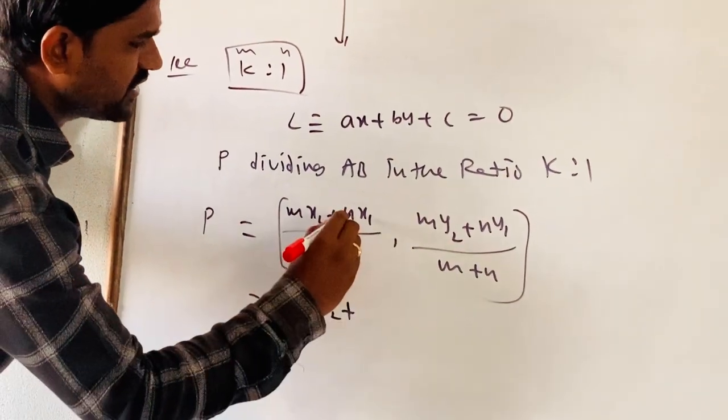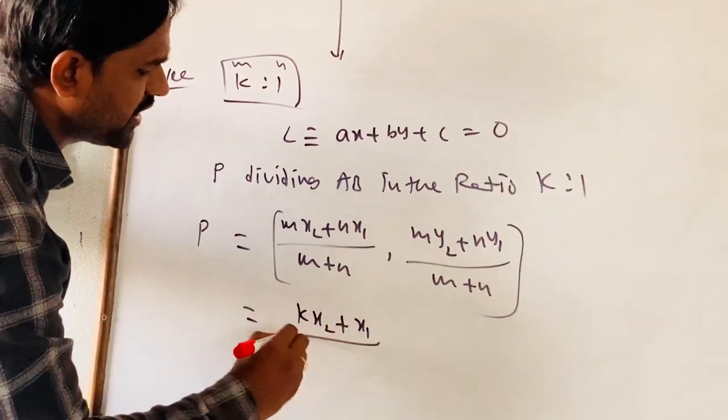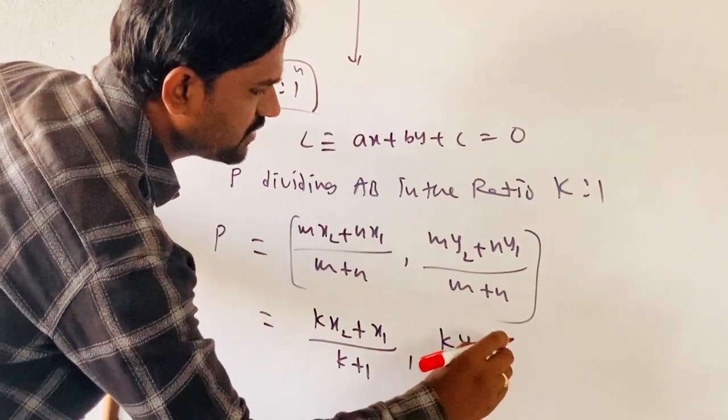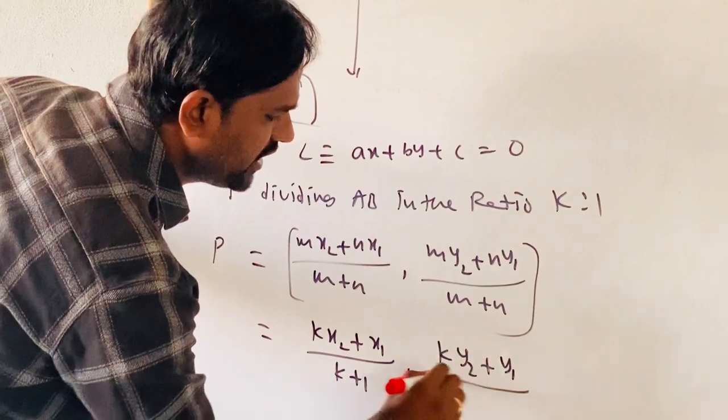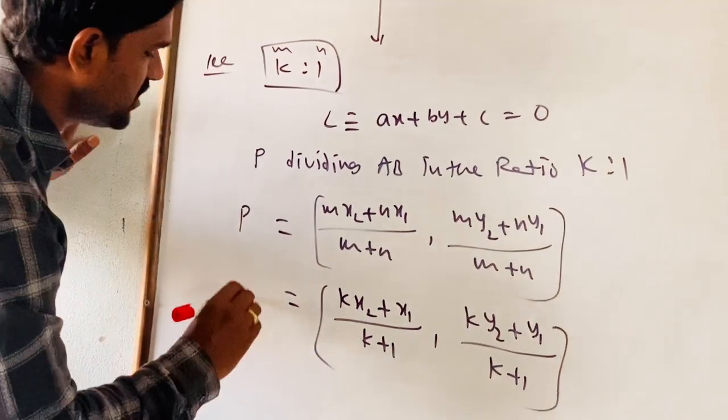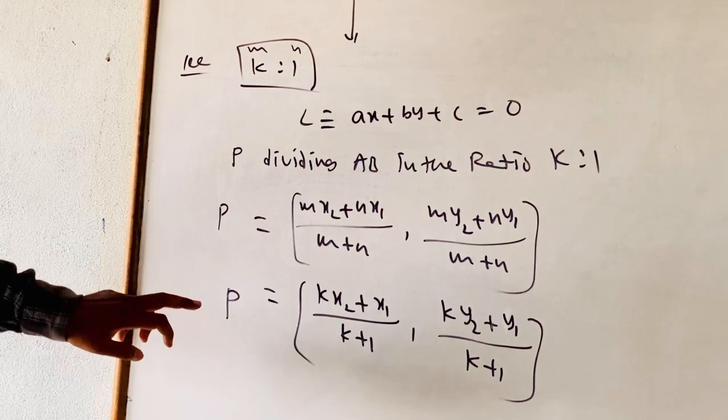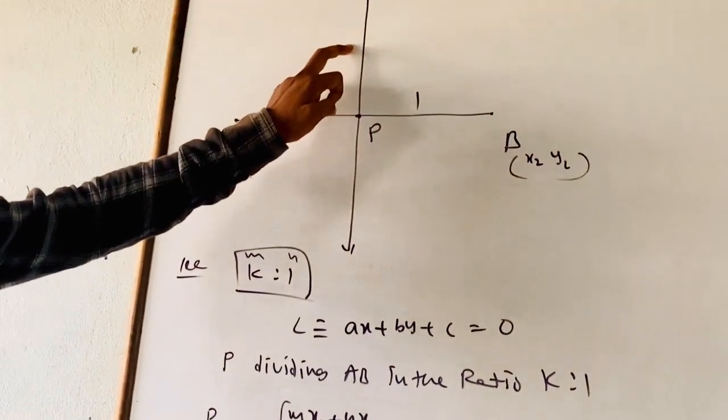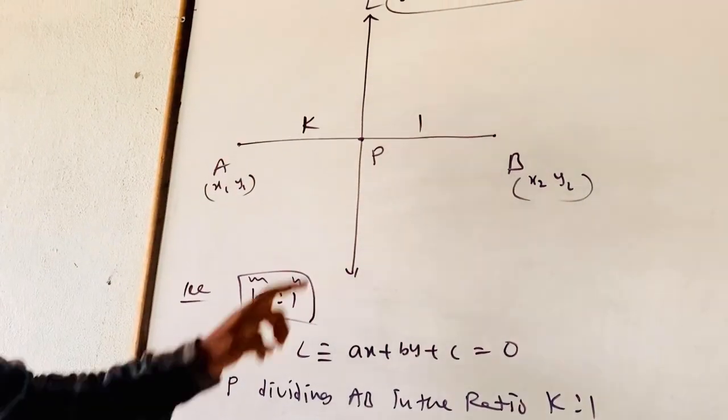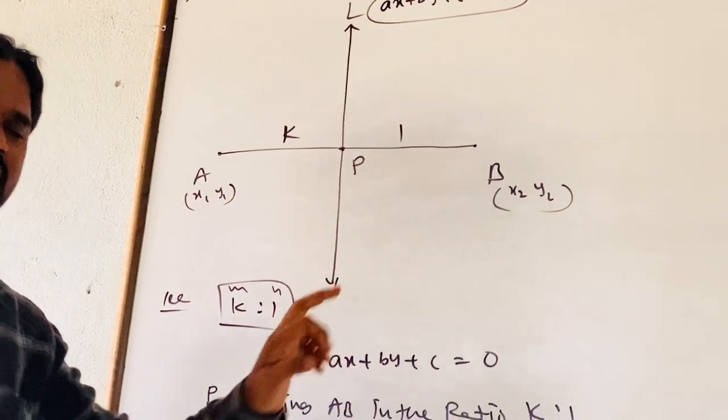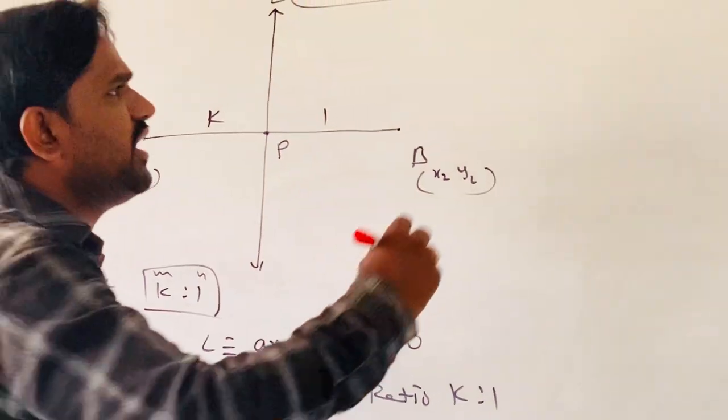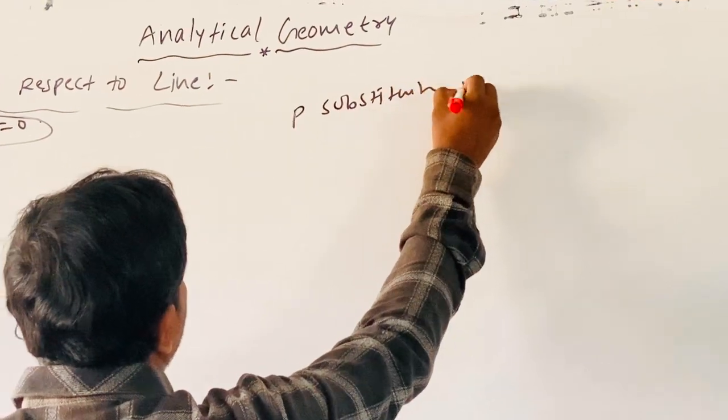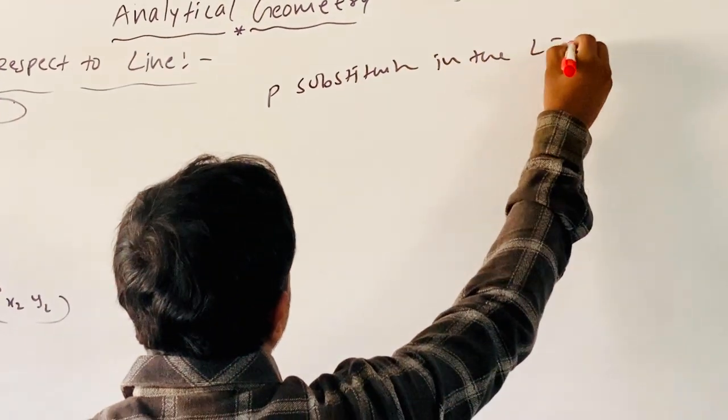So we get (KX2 plus X1)/(K plus 1), (KY2 plus Y1)/(K plus 1). This is the coordinates of P. P lies on AB and also on line L, so P must lie on the line AX plus BY plus C equals 0.